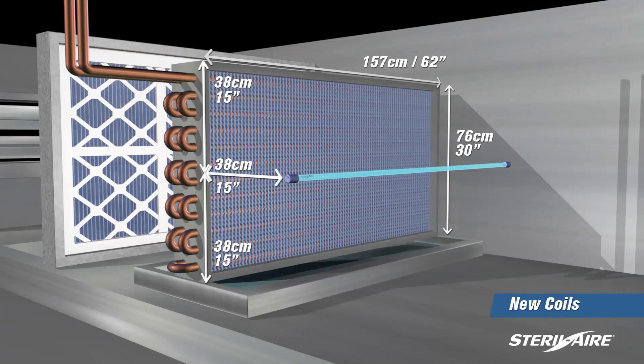To maintain a minimum UVC dose on a new coil and to keep the coil clean, we recommend using one horizontal row of sterile air across the full coil face for every 30 inches, 76 centimeters of vertical coil height.